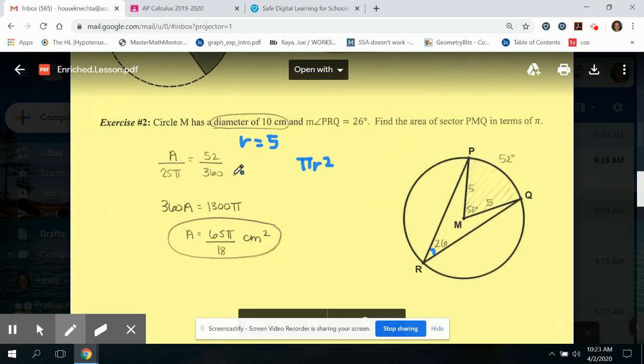I compare that to 52 degrees out of 360. Again, it said in terms of pi, so when I multiplied in my calculator, I multiplied the 52 and the 25 to get 1300, put the pi next to it, multiplied across for the 360A. And then when I divided both sides by 360, I again ignored the pi and the calculator automatically reduced the fraction for me. I know the units happen to be centimeters, so now it's going to be centimeters squared.